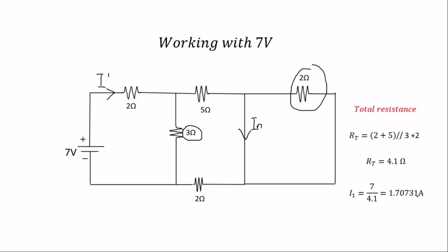Now applying the current division rule, since this is opposite there, you're going to get 3 over (3 plus 7) times the main current of 1.70731 amps, which is 70 over 41. When you do that correctly, the Norton's current from this source is going to give you 0.525 amps.